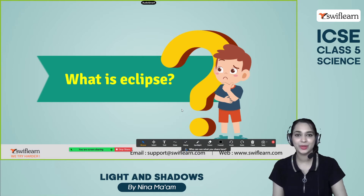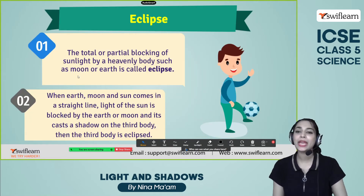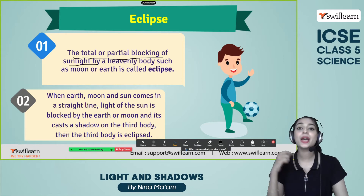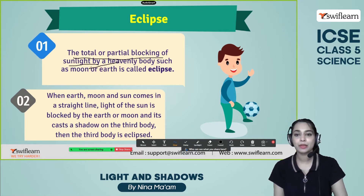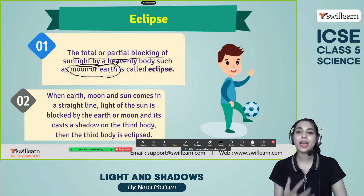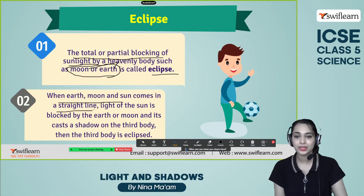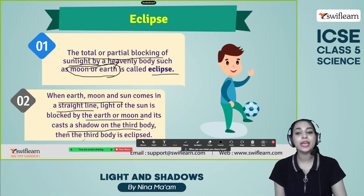So what is eclipse? Eclipse means the total or partial blocking of sunlight by a heavenly body. This heavenly body can be the earth or the moon — these are the two possible heavenly bodies which can block sunlight. That is called the eclipse. When the earth, moon, and sun come in a straight line and are aligned, the light of the sun is blocked by the earth or the moon, and it casts a shadow on the third body. Then the third body is eclipsed.